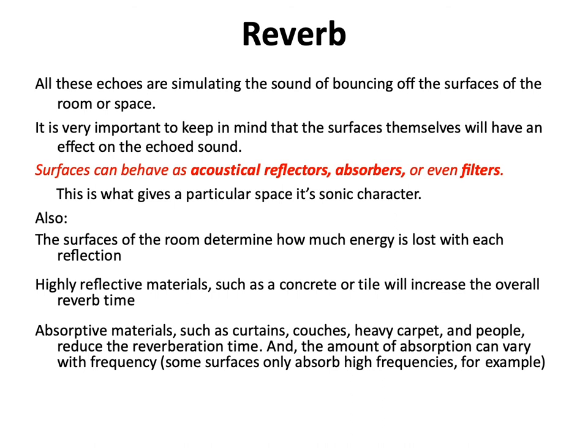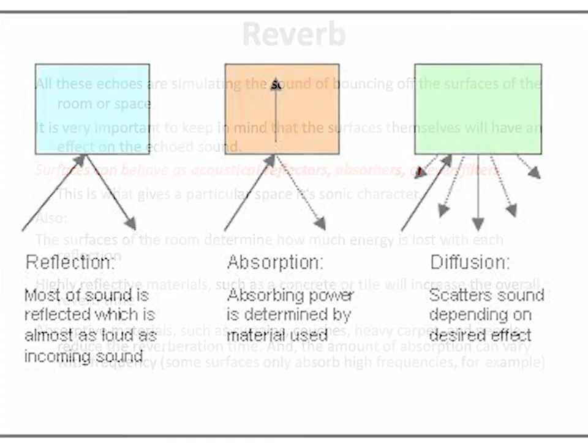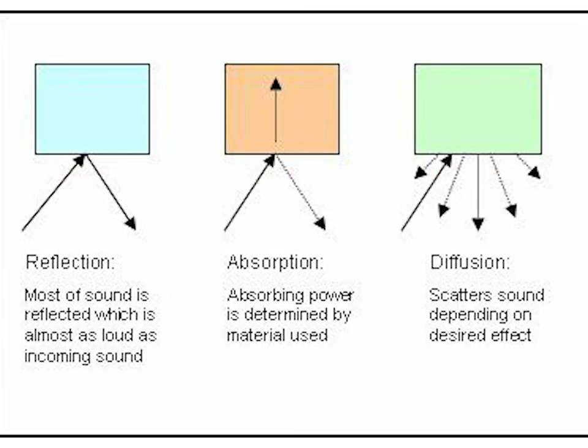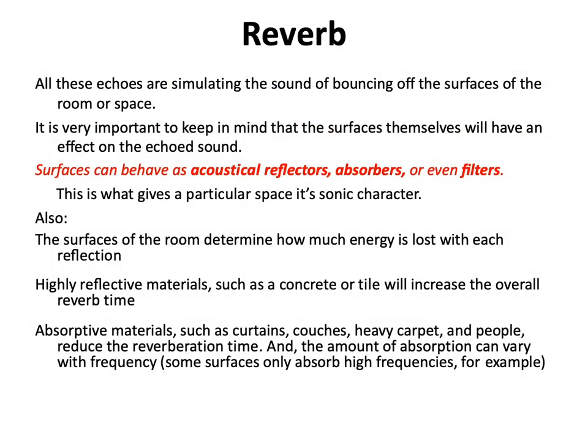All of these echoes simulate sound bouncing off surfaces of the space. It is very important to keep in mind that the surfaces themselves will have an effect on the echoed sound. Surfaces can behave as acoustical reflectors, absorbers, or even filters — this is what gives a particular space its sonic character. For instance, a room made of all tile would have a brighter sound than a room made of wood, which would have a warmer sound.